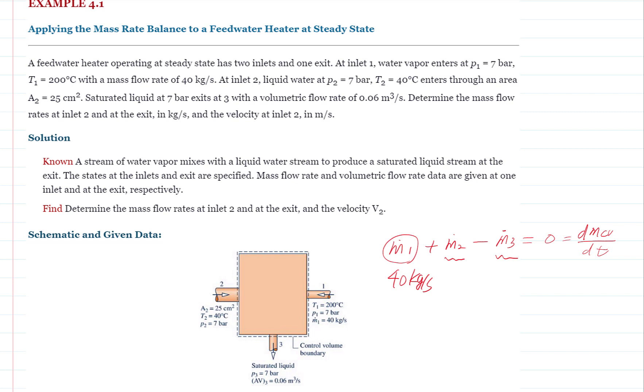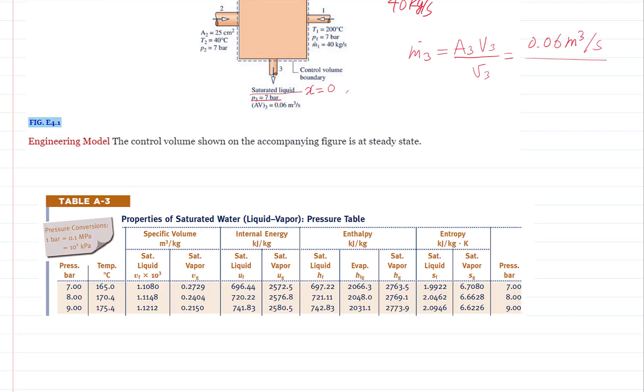First, let's take a look at the exit 3. Phase of the water is saturated liquid, which means quality is zero and the pressure is given. So, we know the two intensive and independent properties. We can fix the state. The mass flow rate is volumetric flow rate divided by the specific volume. Volumetric flow rate is given 0.06 cubic meter per second. We can determine the specific volume at 3. See table A3. At 7 bar, specific volume of the saturated liquid is here. So, 1.1080 times 10 to the negative third cubic meter per kilogram.